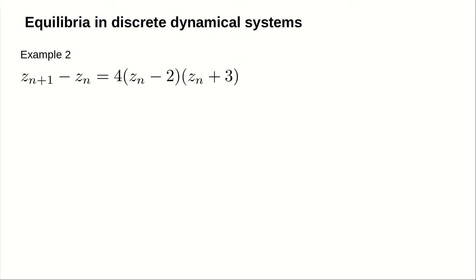Let's look at another example, this time in difference form. z sub n plus 1 minus z sub n equals 4 times the quantity z sub n minus 2 times the quantity z n plus 3.